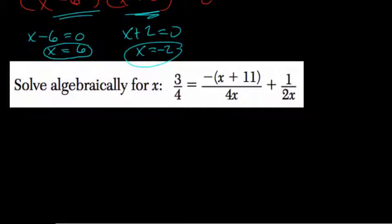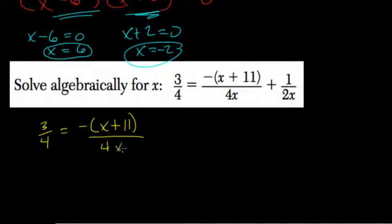Okay, here's the number to solve algebraically. We have 3 over 4 equals negative times x plus 11 over 4x plus 1 over 2x.